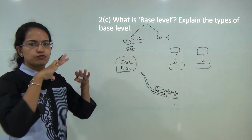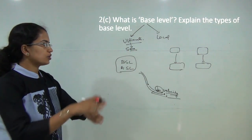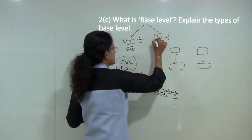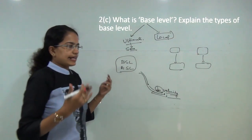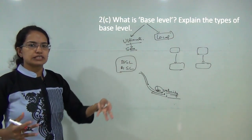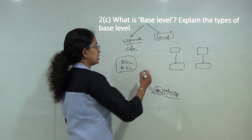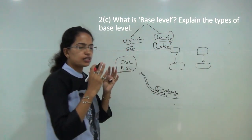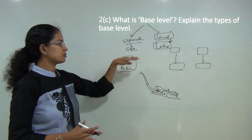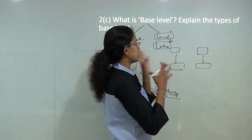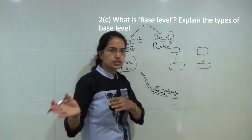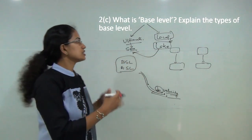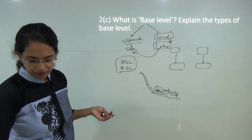The sea is the ultimate base level. For local base level, water moves from a stream and merges into a lake — at that point the lake becomes the local base level. Then the water from the lake flows further and merges into the sea, reaching the ultimate base level. This is how we explain the concept of base level.